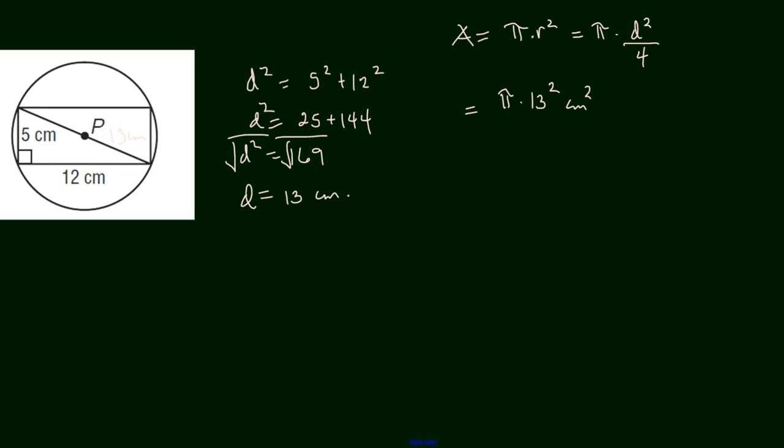That is not correct. It is completely wrong. Pi multiplied by 6.5 square cm. 6.5 square, that is 42.25 pi square cm.